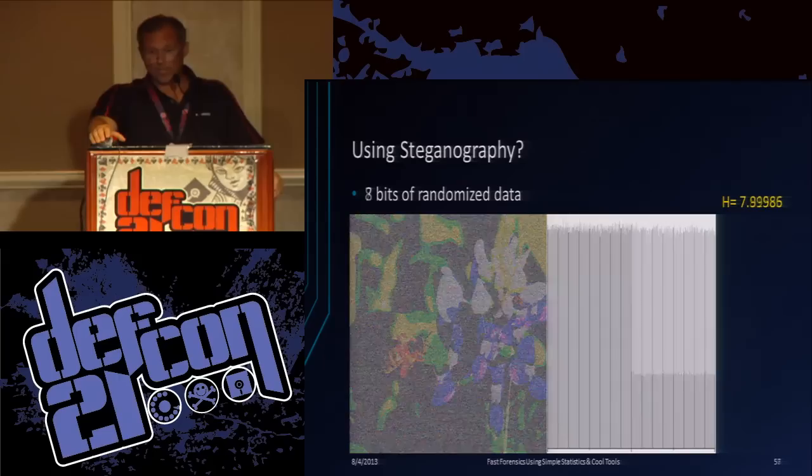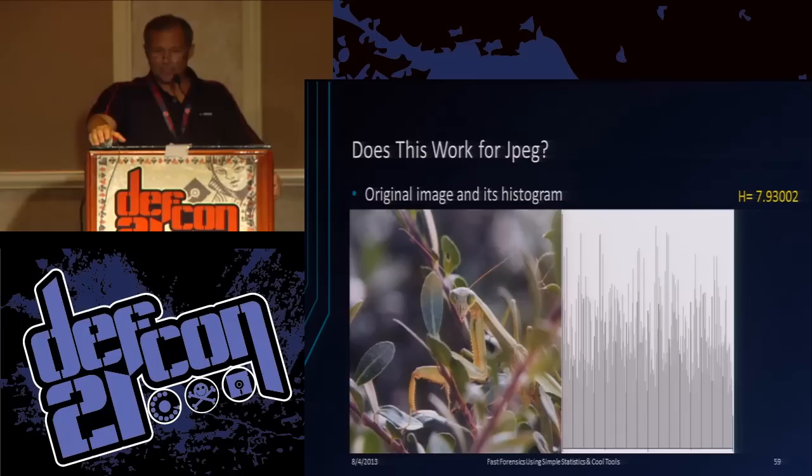Anyone want to guess what kind of data we're hiding? Obviously it's randomized data, because it's very flat over here. If we were hiding text data, we'd get a text look to the histogram at seven bits. Then at eight bits you don't have a bitmap at all. How about JPEG - does this work?